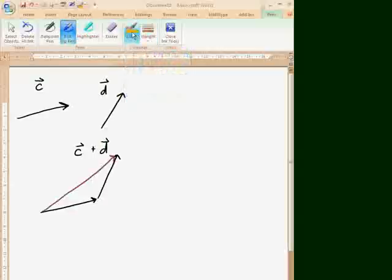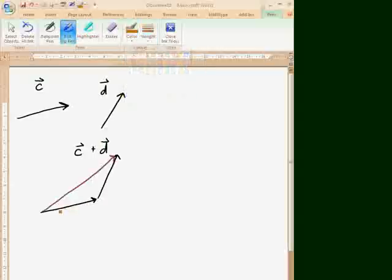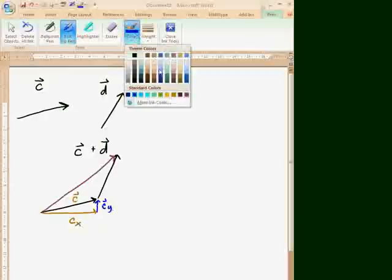Now, the idea of this is that I can take the C vector, right? And I can break it up into an X vector, so that's CX and a Y vector. So, that's CY, alright?